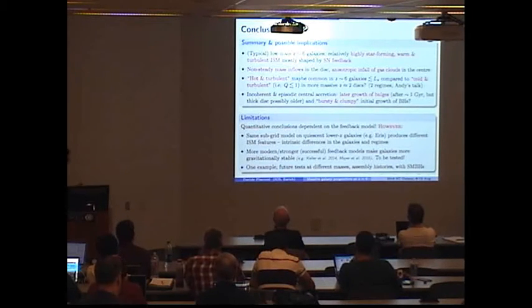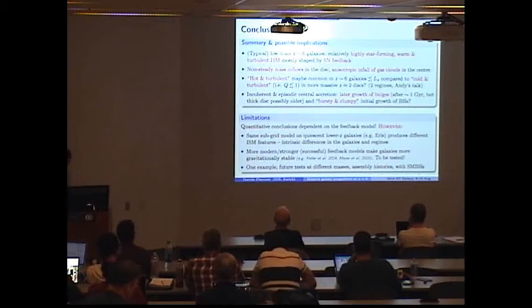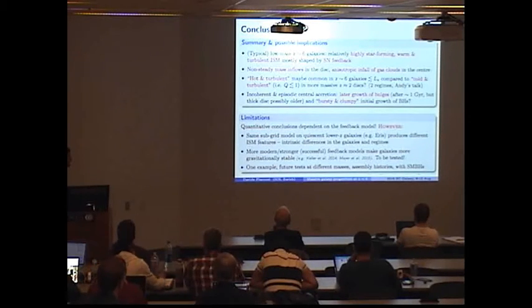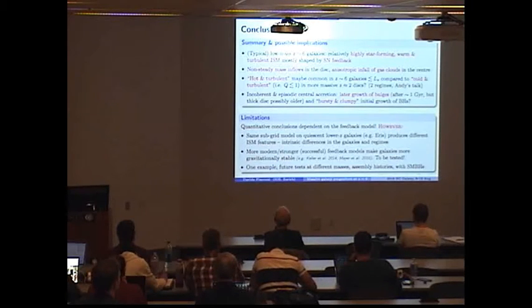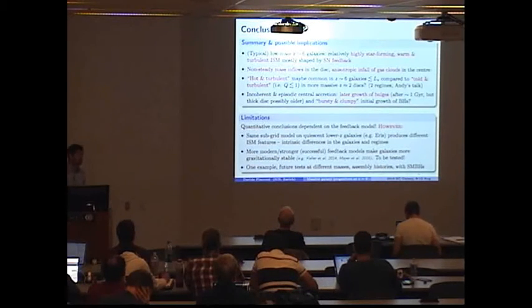However, I would argue that I think that the qualitative picture should still hold, because at a given sub-grid model, if you compare the properties of more quiescent and lower redshift galaxies and things that I showed you already, those clearly produce significantly different ISM features, which suggest that there are intrinsic differences in the galaxies and regime. And moreover, it has been shown recently that even with more modern and stronger kind of feedback models, galaxies tend to be even more gravitationally stable, which at least qualitatively go into the same direction on what I showed you.